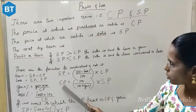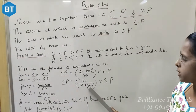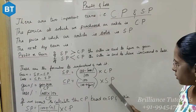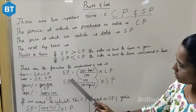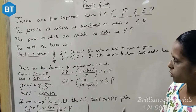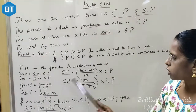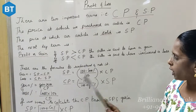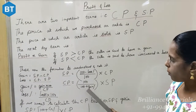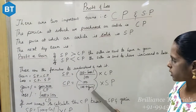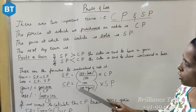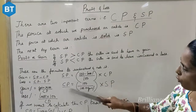Next, when they have given the gain percentage and the selling price and asked you to find out the CP, that is cost price, the cost price will be equal to 100 divided by 100 plus gain percent, into selling price.